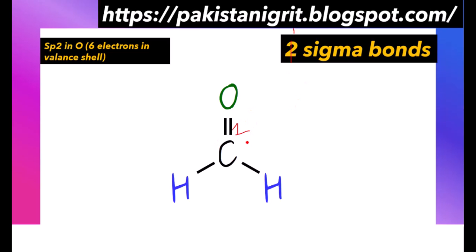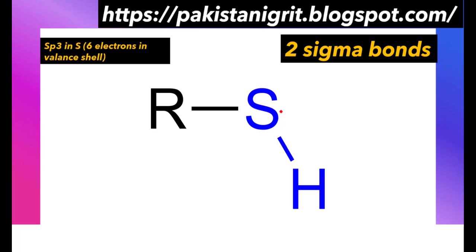In the case of formaldehyde, we can observe that oxygen is forming one sigma bond — this hybridization will be sp2. One sigma bond in oxygen means sp2 hybridization.